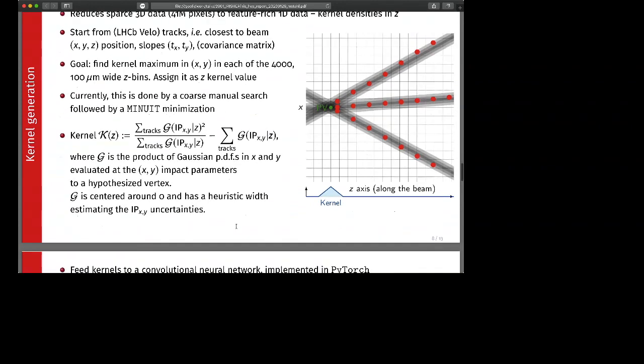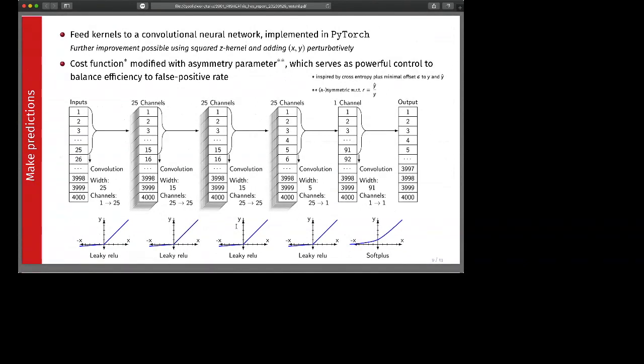Now we have these kernels and with the kernels we can make predictions. We will feed them to a convolutional neural network that is implemented in PyTorch. You can see the layout of this convolutional neural network below, which is actually a bit old. We have updated this. We are not using five convolution steps but we are now using six or seven. We have also seen some further improvements by using not only the Z kernels but also the squared Z kernels and adding X and Y perturbatively to the network itself.